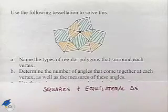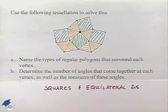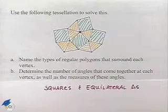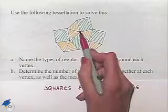In part B, we're asked to determine the number of angles that come together at each vertex as well as the measures of these angles. So we notice back where the vertex is labeled,